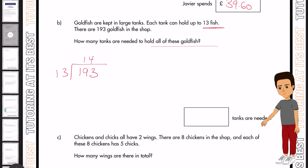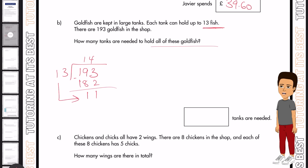So we'll have 14 here, 182 here, subtract that away. As you can see, we've got 11 left, but 13 doesn't go into 11. So we'll have a remainder of course. So we can put that as 0.8. So we'll have 15 tanks in total because you cannot have 0.8 of tanks.